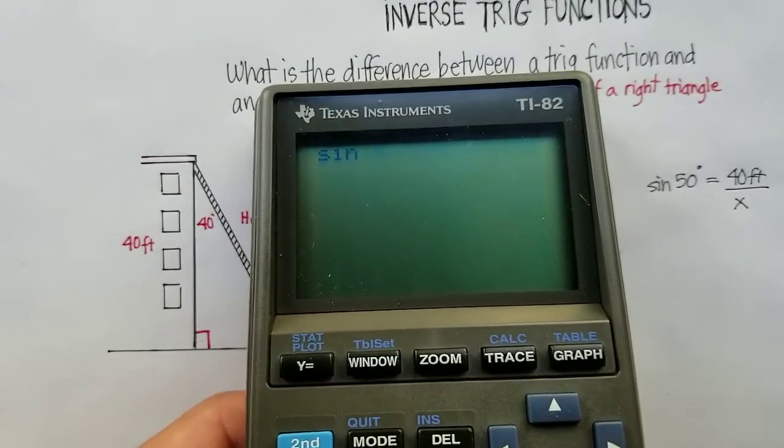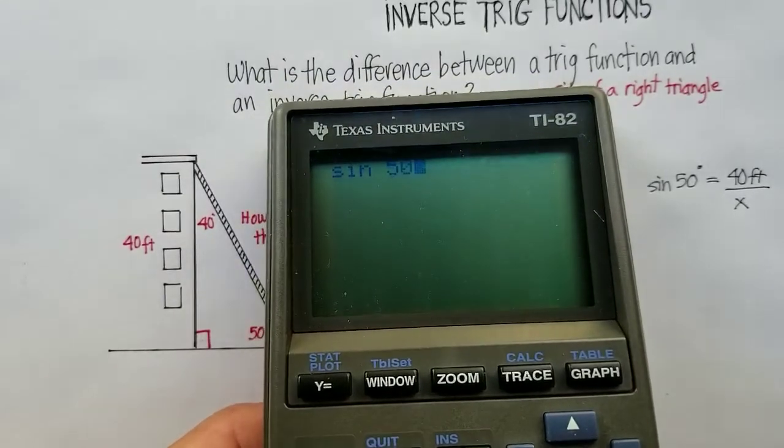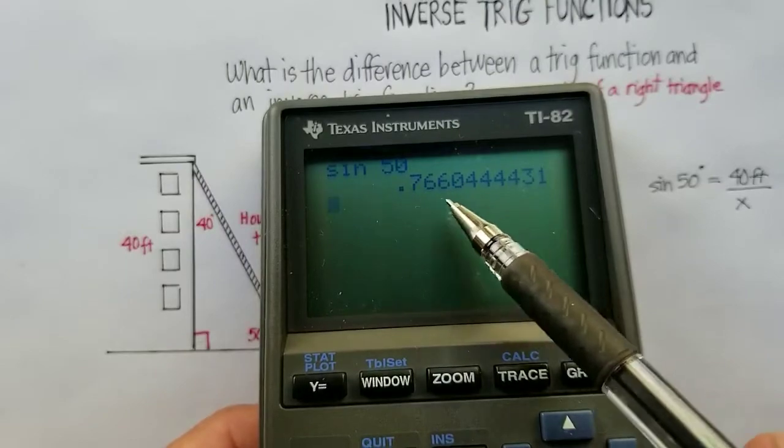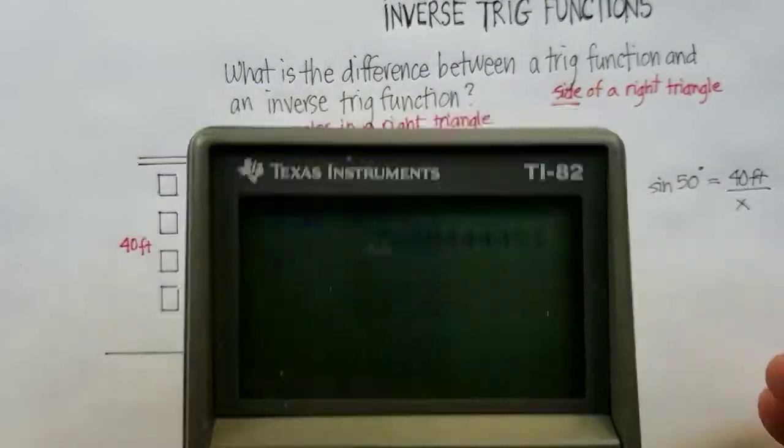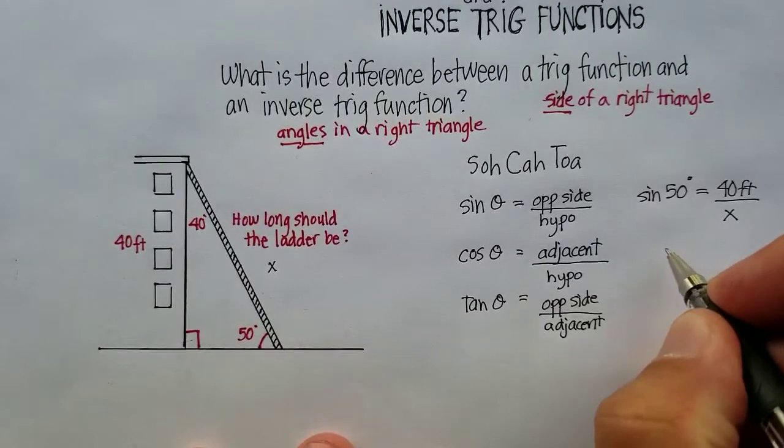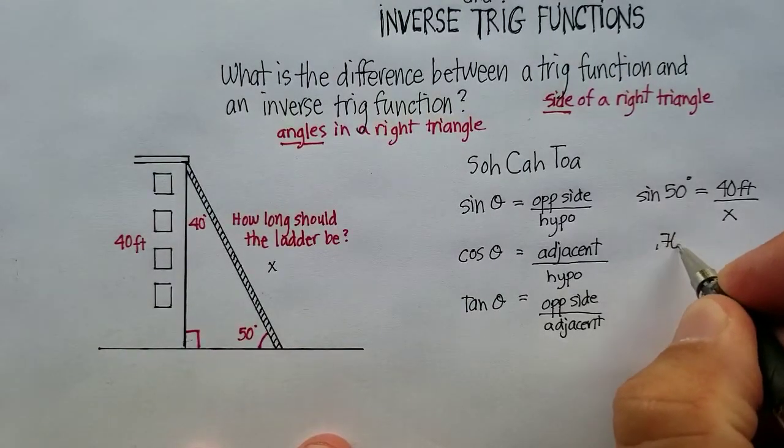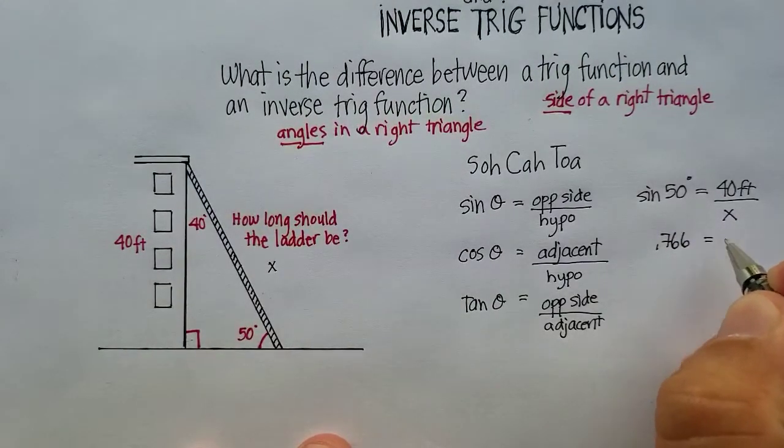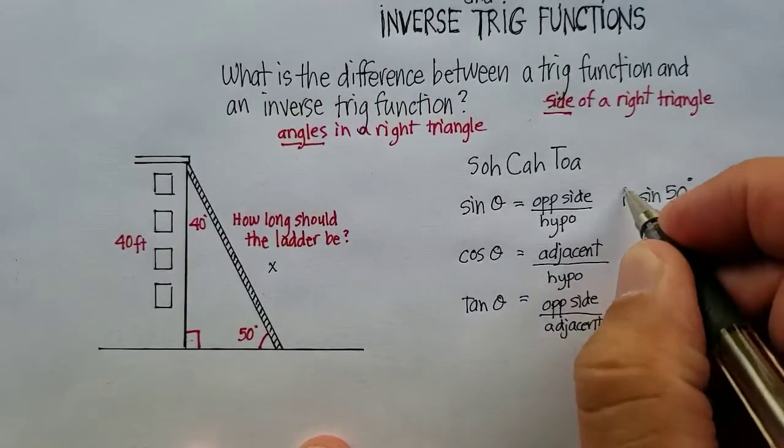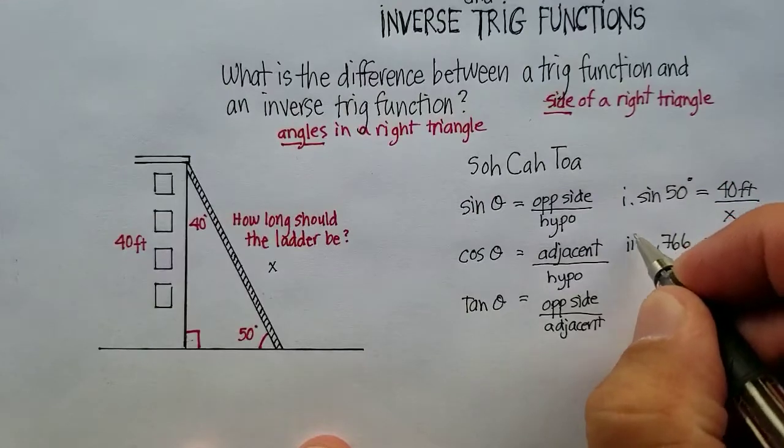So we said the sine, 50 degrees, is going to be equal to .766. Okay, so that's the ratio that we're going to use, or the decimal that we're going to use. .766 is equal to 40 over x. That's my step one. That's my step two.